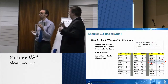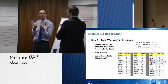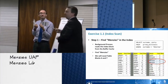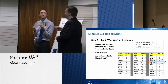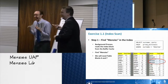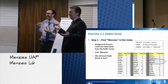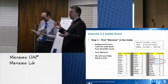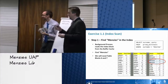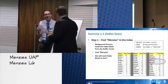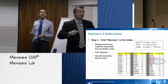How many block reads did I have to do? Two. So I went back to disk twice. What's the most expensive bit of that operation? Going to disk. And I've done it twice.